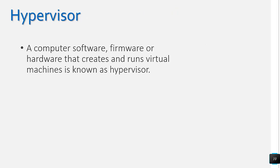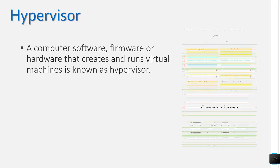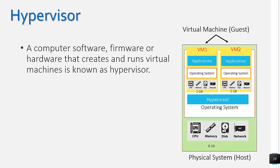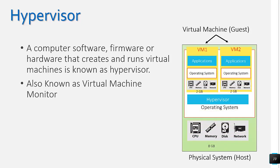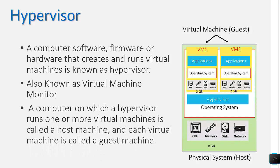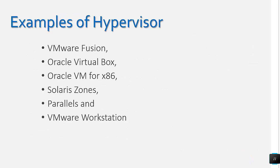Next, let's see what a hypervisor is. As we have seen in previous diagrams, a computer software, firmware, or hardware that can create or run virtual machines is known as the hypervisor. It is also known as a virtual machine monitor. A computer on which a hypervisor runs one or more virtual machines is known as the host machine, and each virtual machine is called the guest machine.